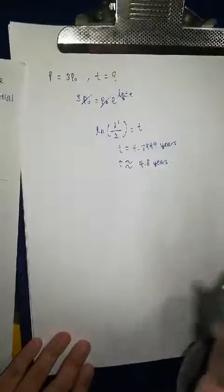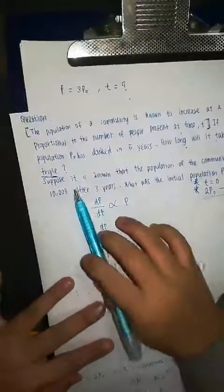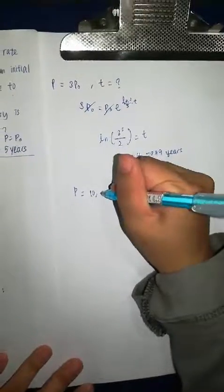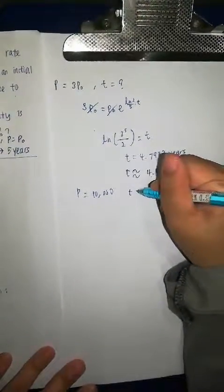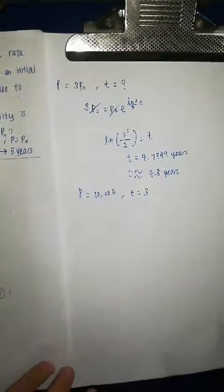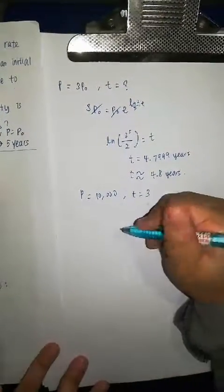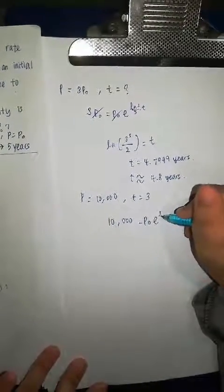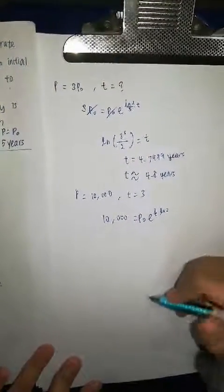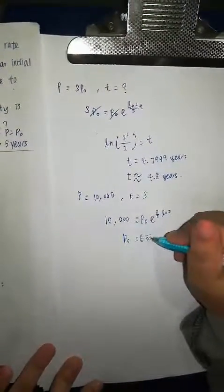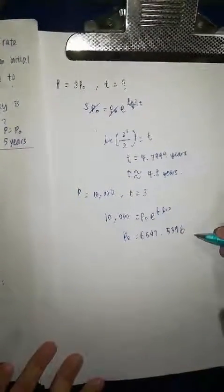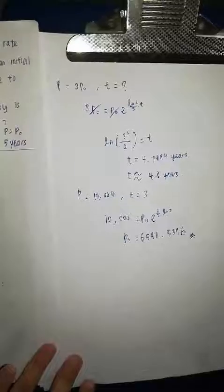Okay, so, move on to the next question. It says, suppose it is known that the population of the community is 10,000 after 3 years. So, we know P is equal to 10,000 and then for T is 3 years. So, by using the general equation again, substitute 10,000 equal to P₀ e to the power of ln 2 over 5 times 3. With that, we know the P₀ is equal to 6597.5396.